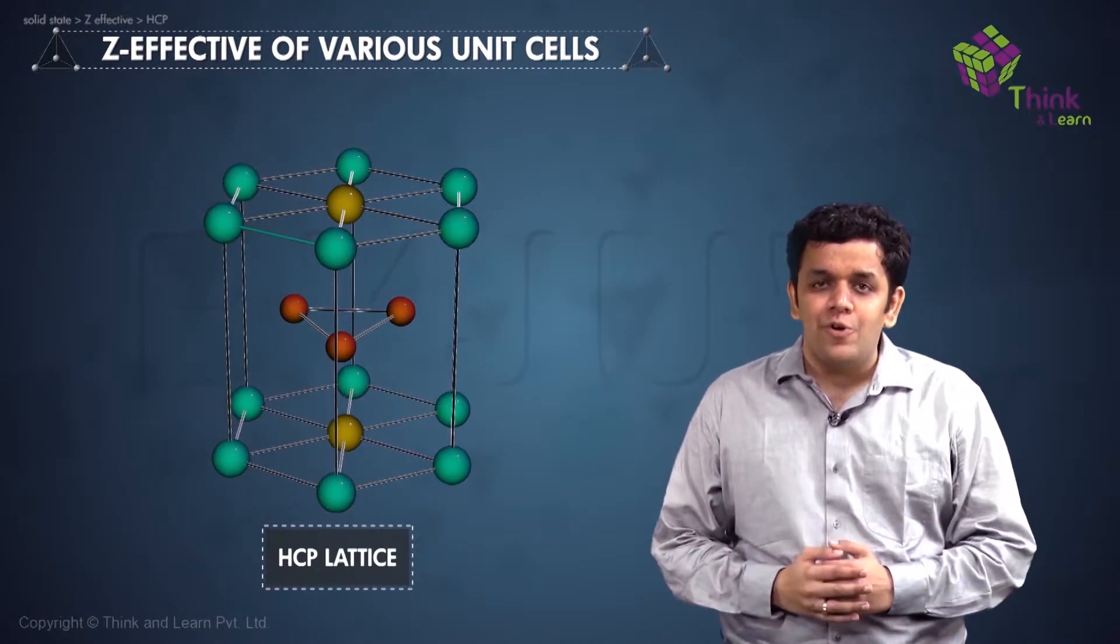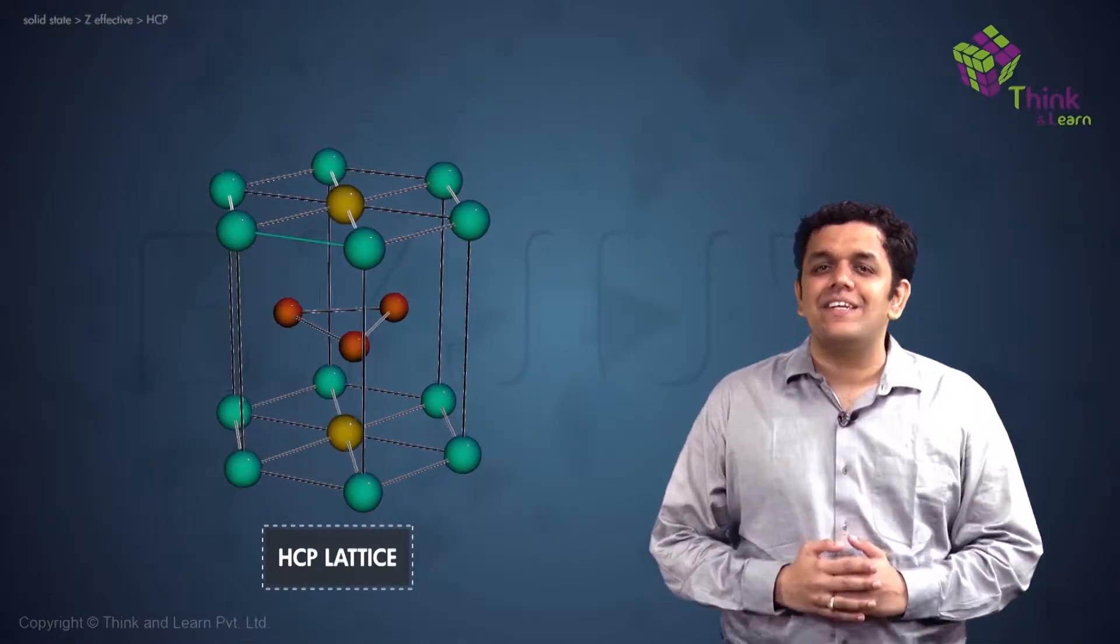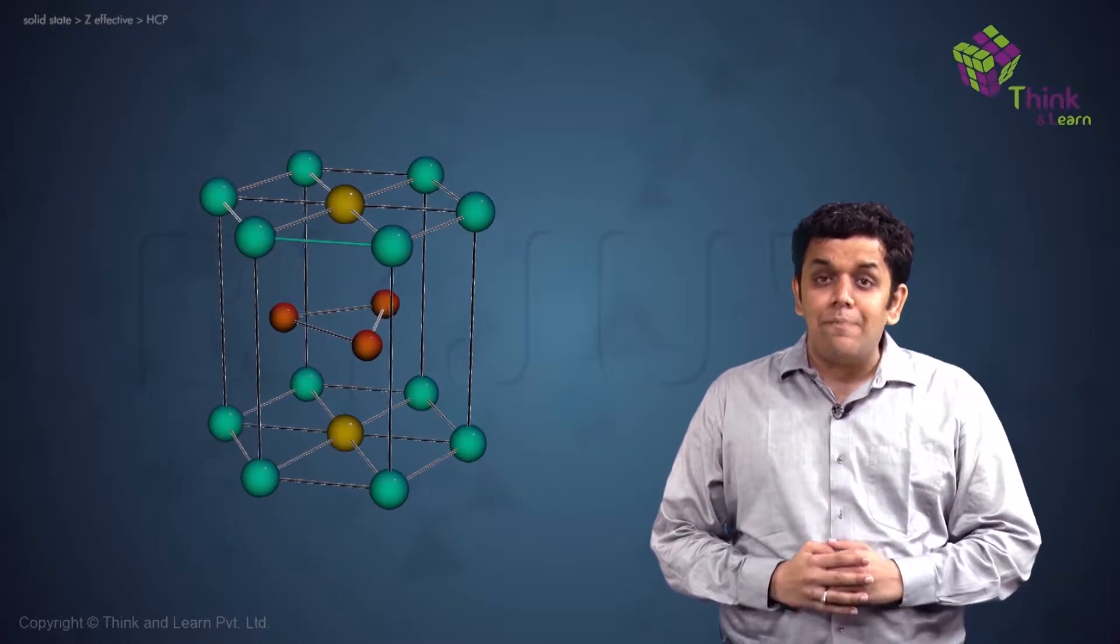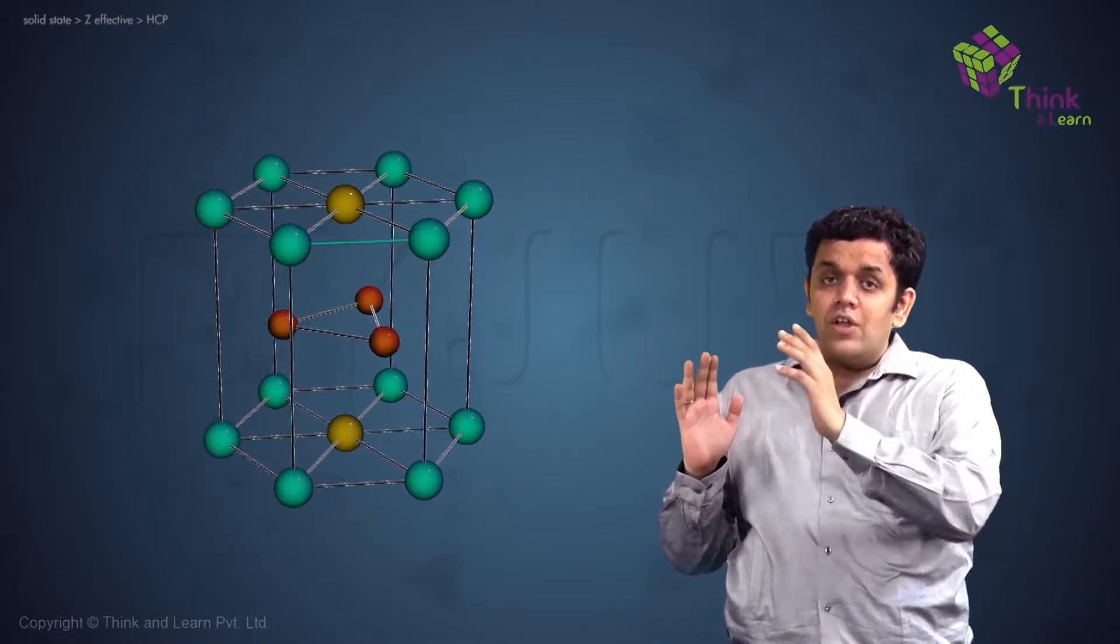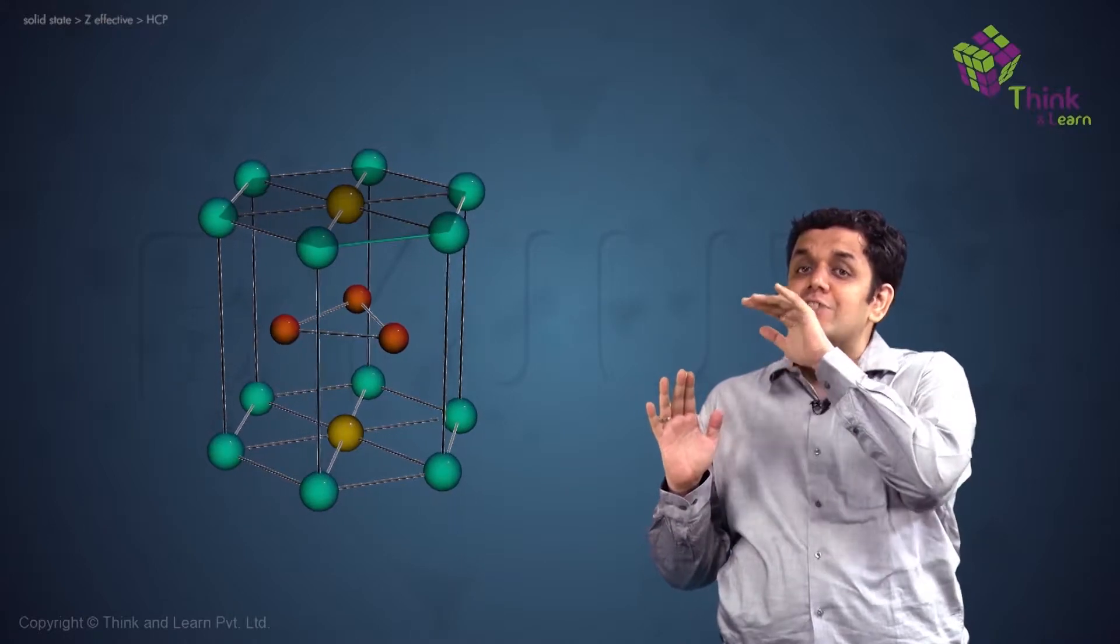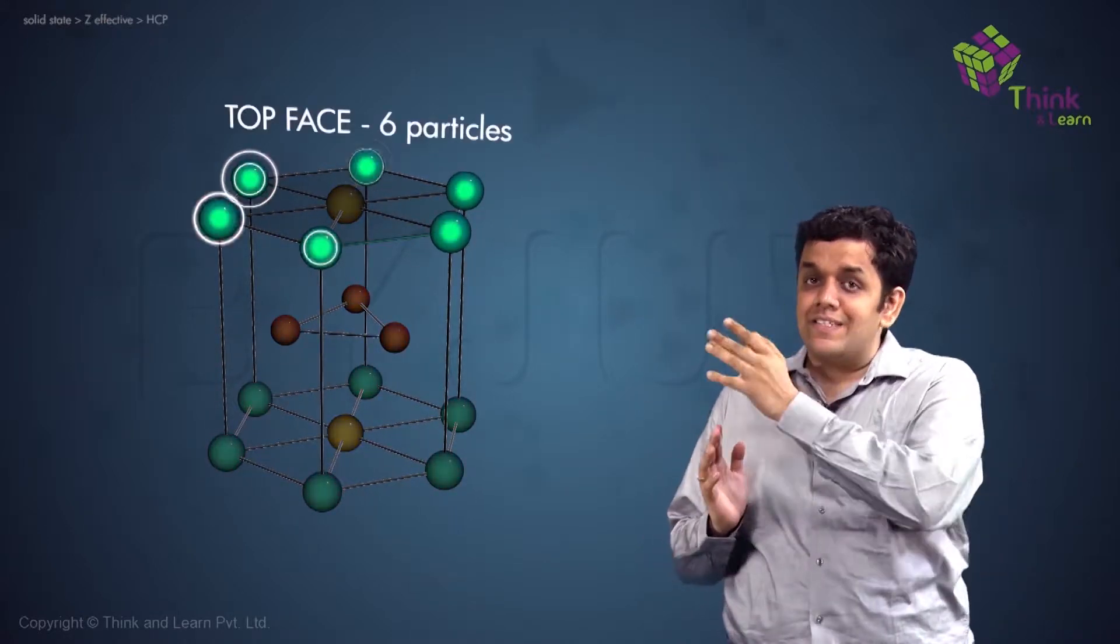Now first of all, let me help you with where exactly the particles are located. The particles are located firstly on the corners of the top face of the hexagon. Six particles as shown here.